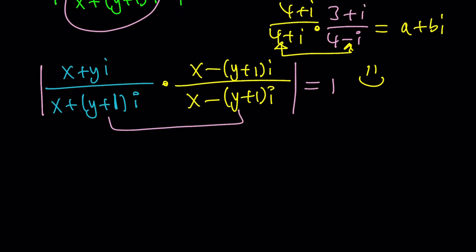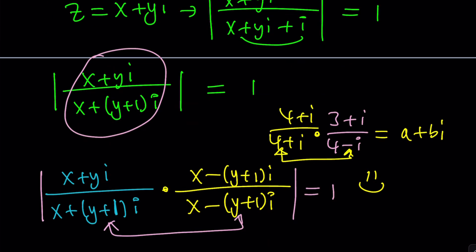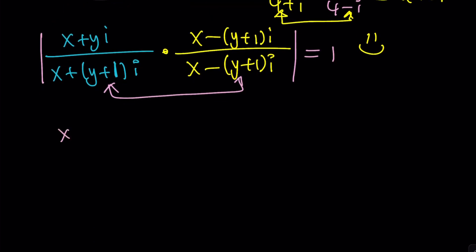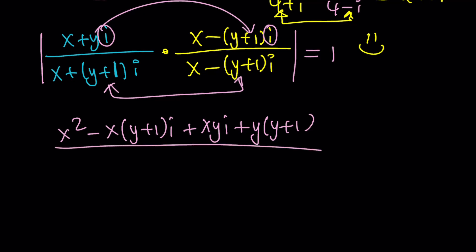How do we work this out? The numerator is just distribution. x times x is x squared, x times that is minus x(y+1)i, then yi times x will be xyi, and when you multiply yi by this, notice that i squared is going to give you negative 1, so the negative will be negated, giving you a positive sign. So y times (y+1).